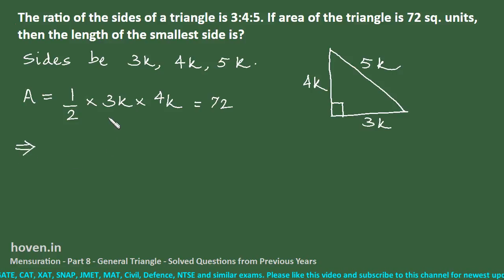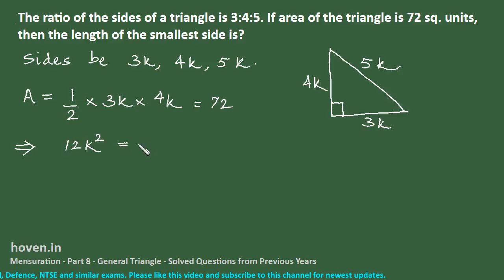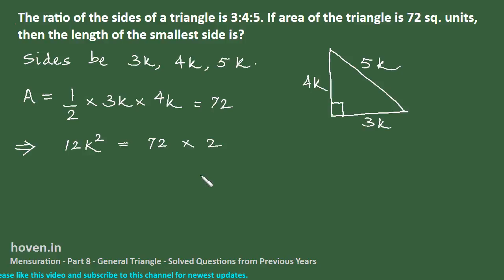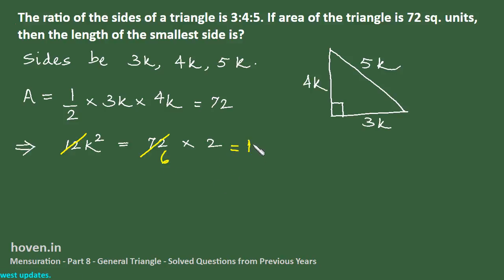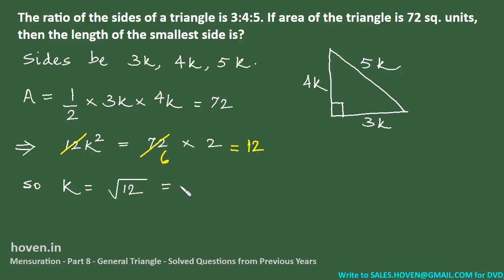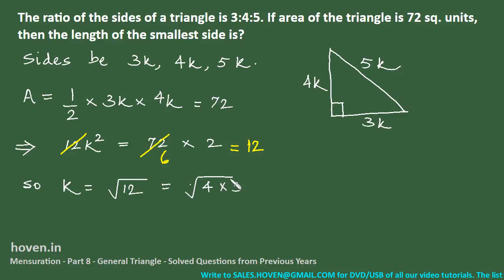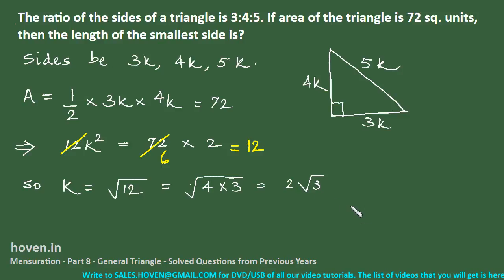Area = half × 3k × 4k = 6k² = 72, which implies k² = 12, so k = 2√3.